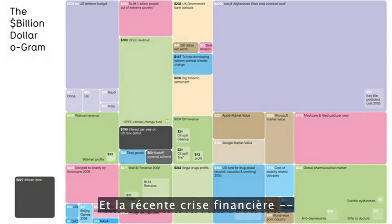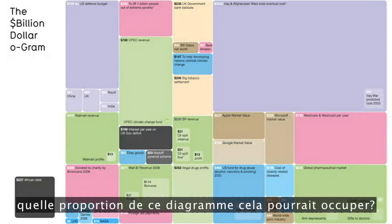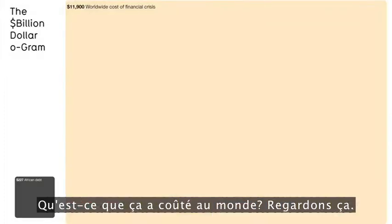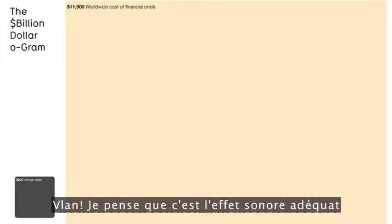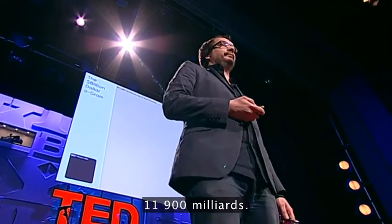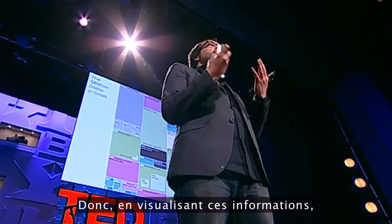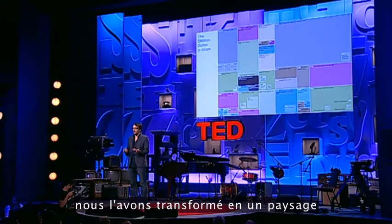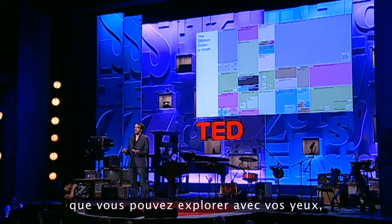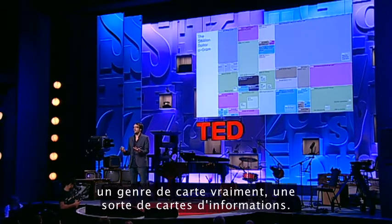And the recent financial crisis — how much of this diagram might that figure take up? What does that cost the world? 11,900 billion. So by visualizing this information, we turned it into a landscape that you can explore with your eyes — a kind of map, really, a sort of information map.